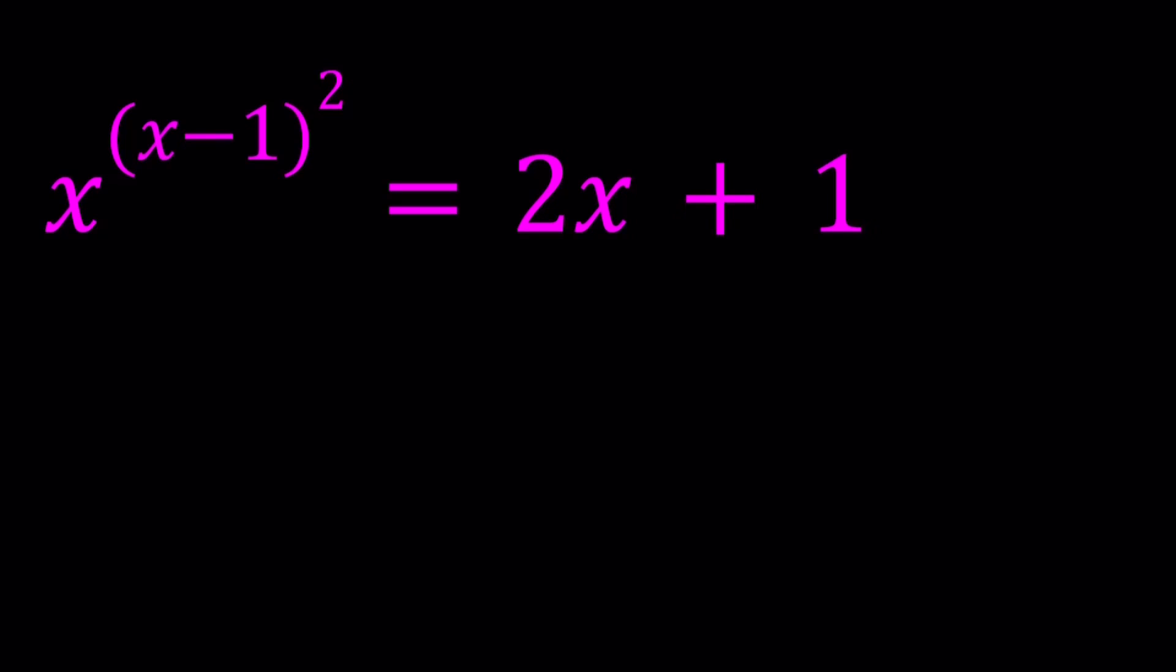So we have x to the power (x-1)² equals 2x+1. I'll be presenting two methods even though the first method is kind of cheap, but it still works. And obviously the second method is my favorite. So let's start with the first one.